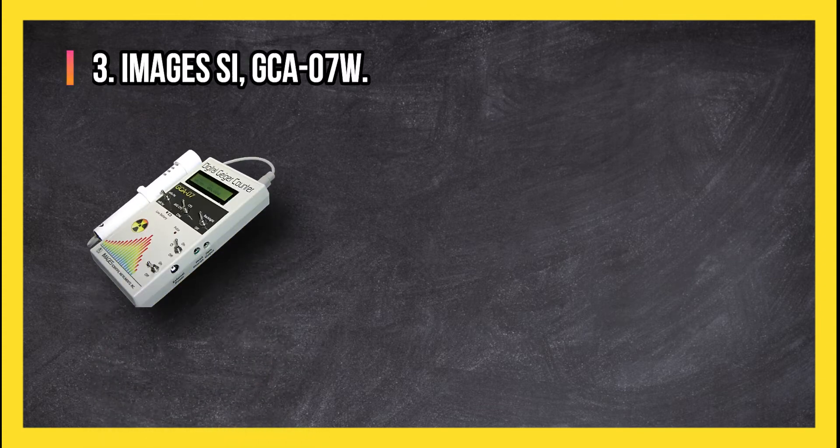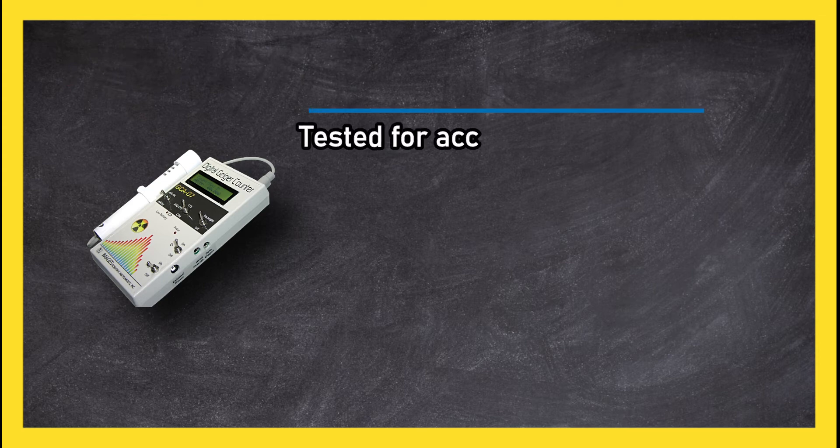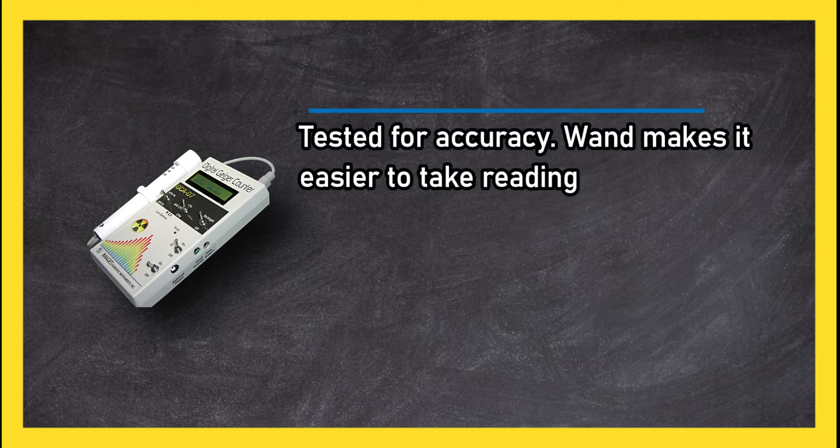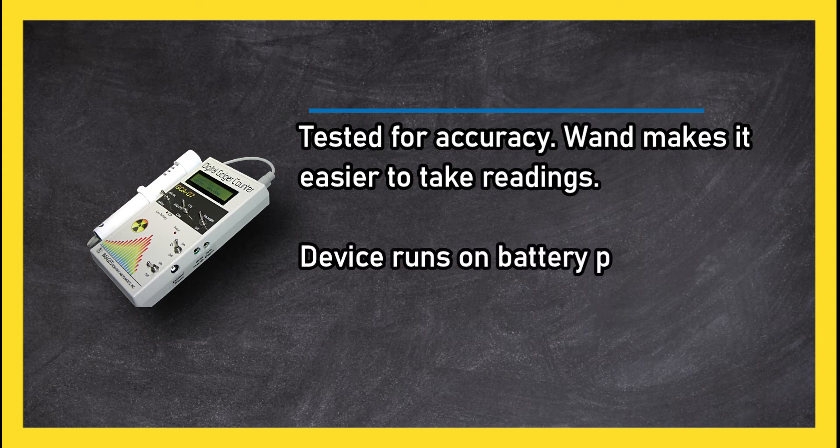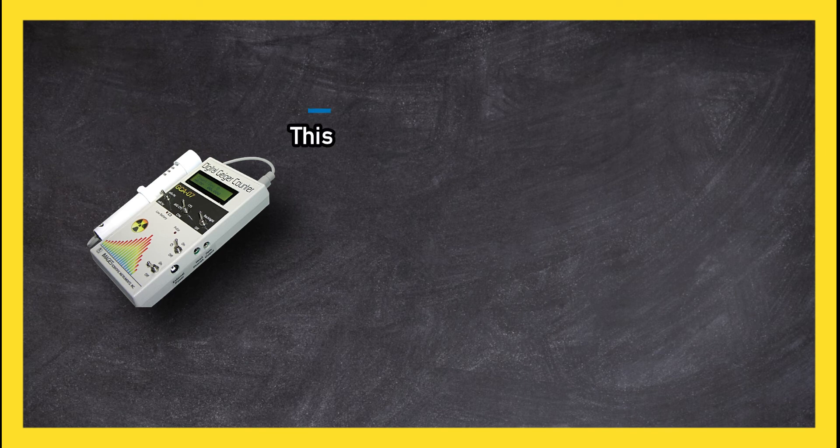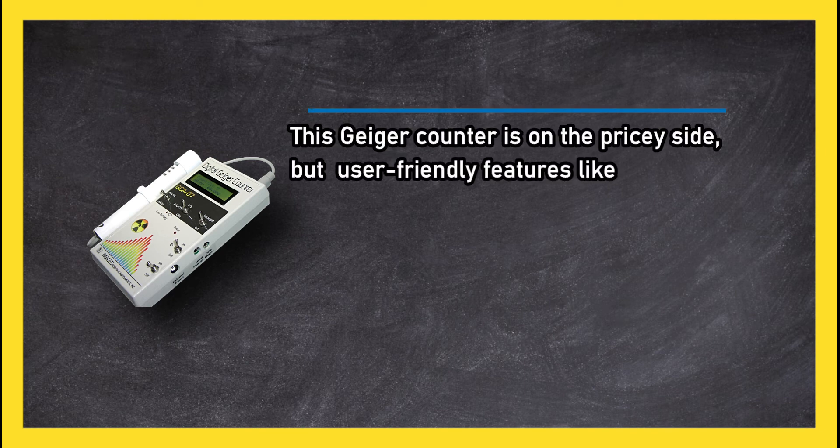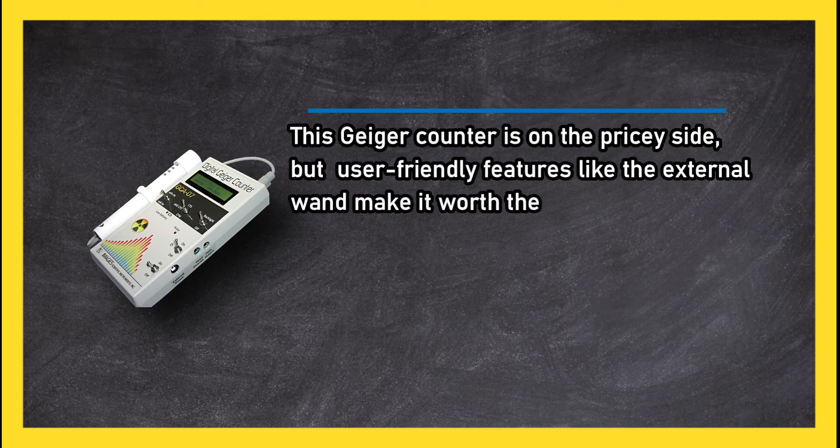At number three, Images SI GCA-K07W. Tested for accuracy, the wand makes it easier to take readings. The device runs on battery power or electricity. This Geiger counter is on the pricey side, but user-friendly features like the external wand make it worth the investment.